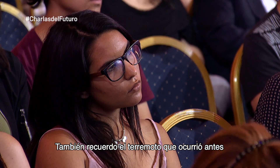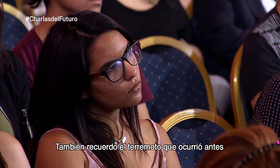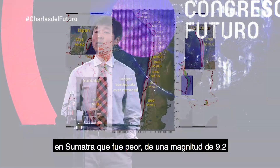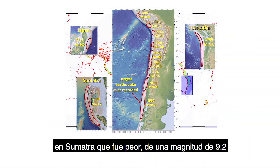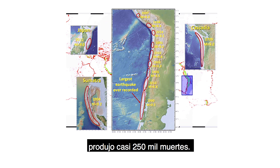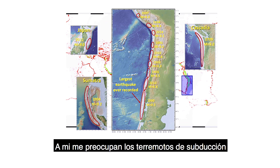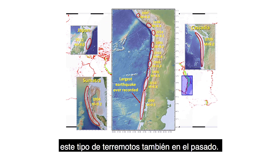You also remember the earlier earthquake in Sumatra—even worse, a magnitude 9.2. The devastating tsunami caused about a quarter of a million deaths around the Indian Ocean. I am concerned about subduction zone earthquakes in my backyard because we know for a fact we've had this kind of earthquake in the past too.